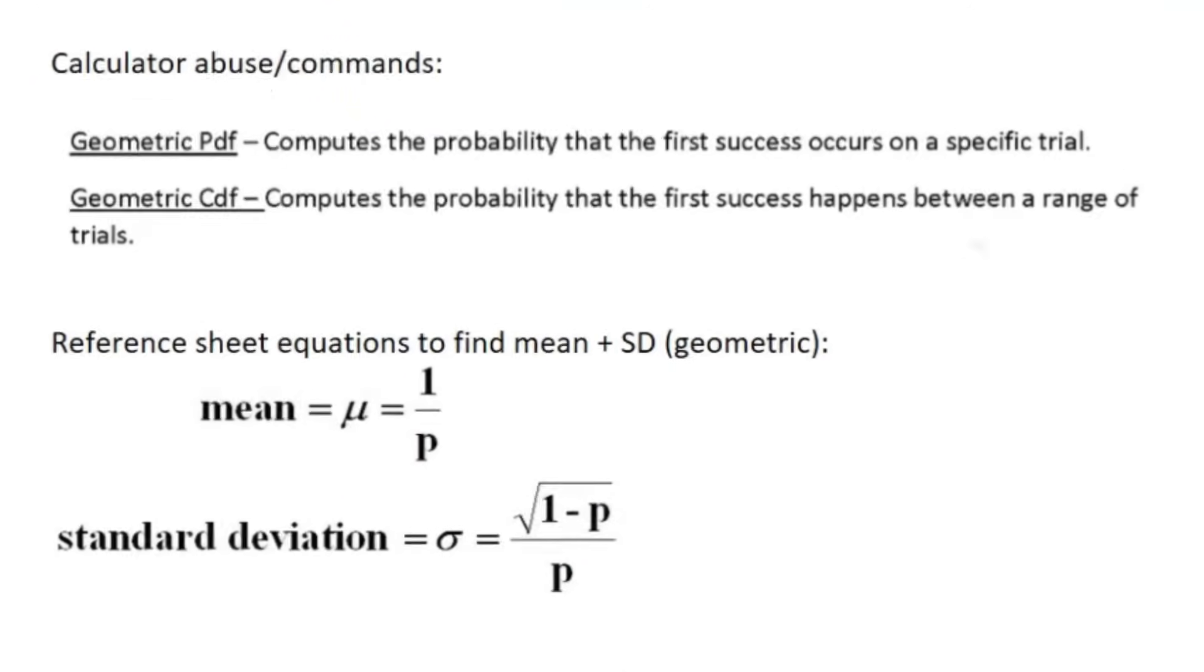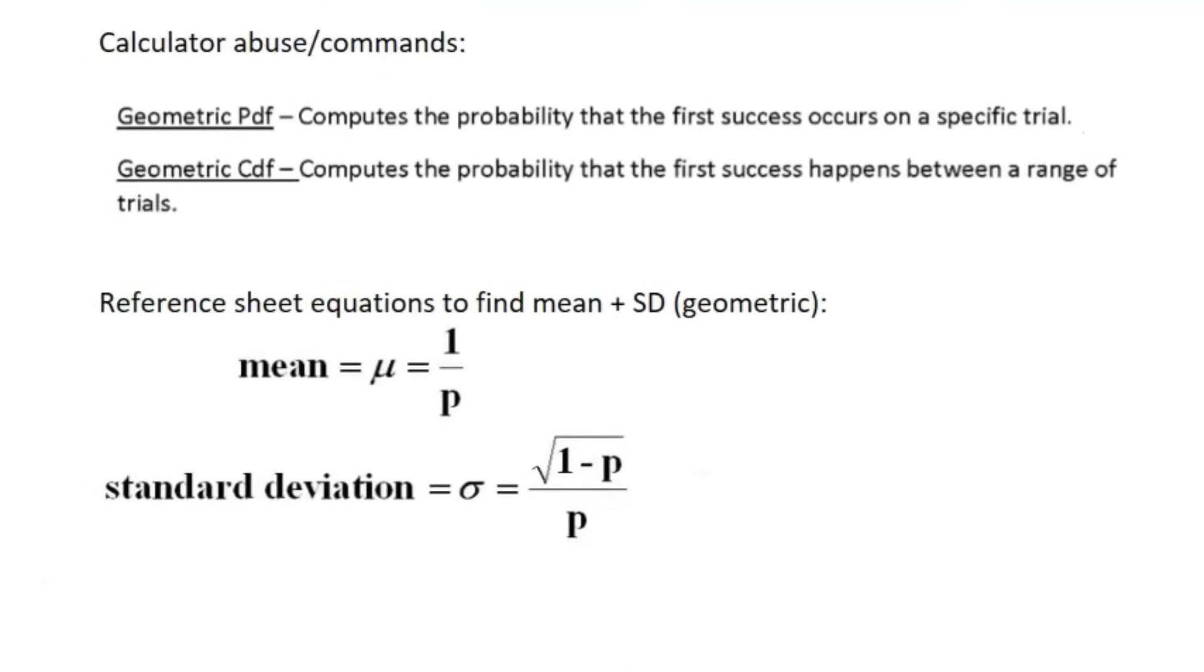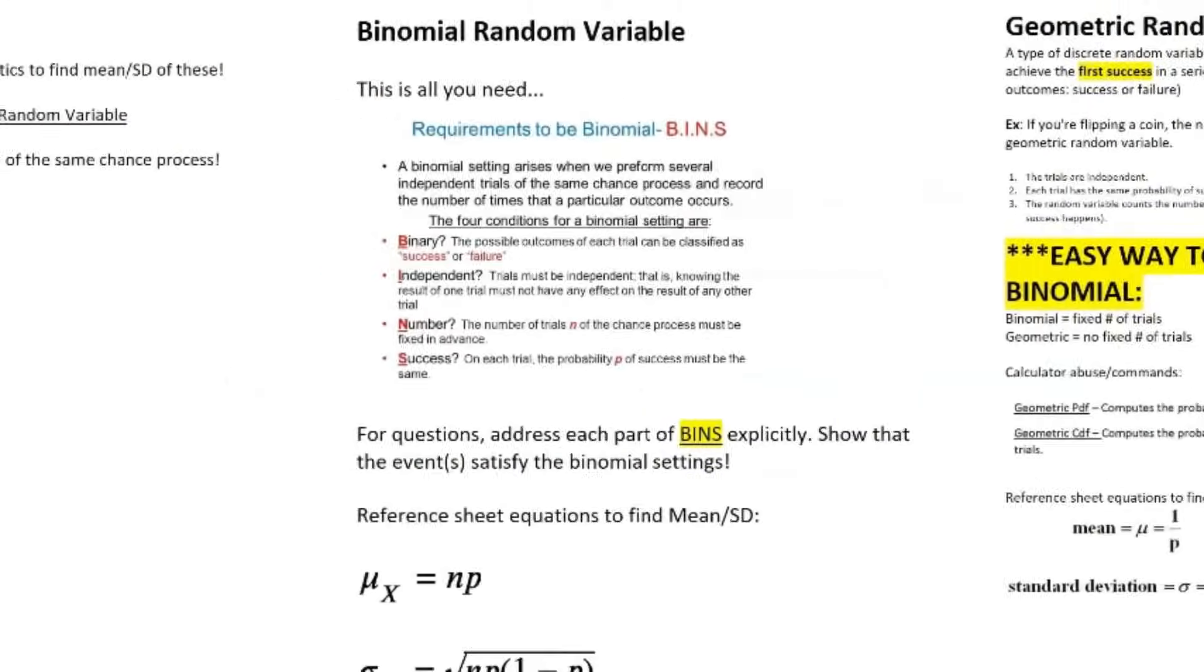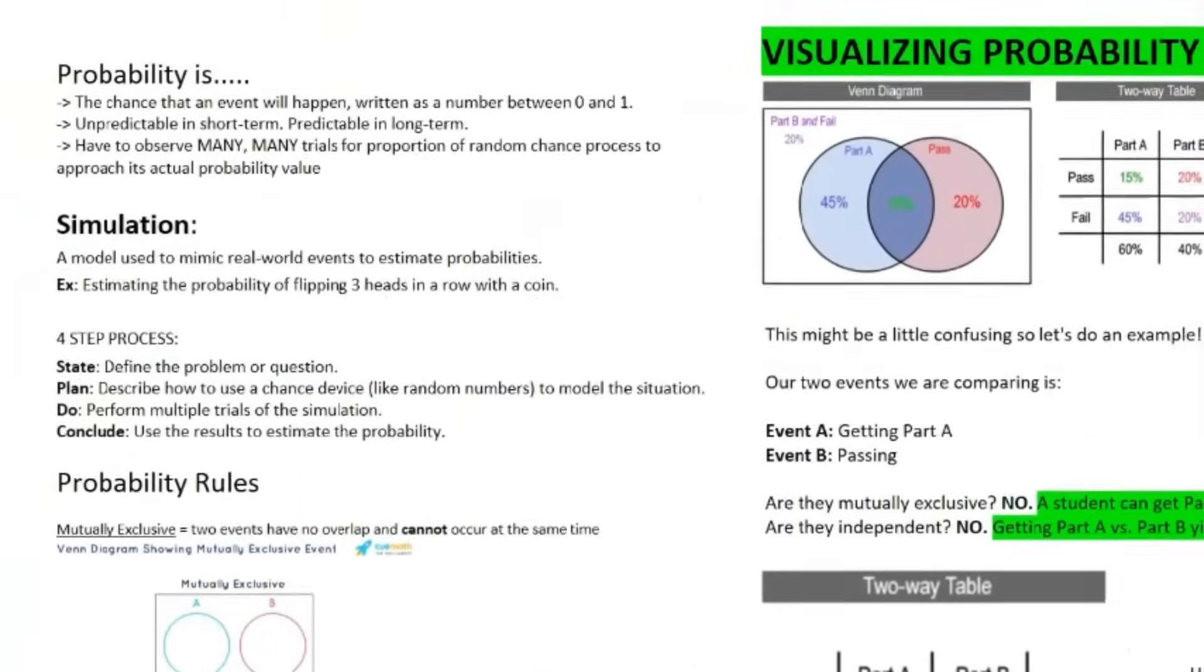And then for the mean and standard deviation of geometric random variables, we have the mean is just one over the probability chance of success. And the standard deviation is square root of one minus probability of success over probability of success. So that does it for all the content you need to know for unit four, probability, and random variables.